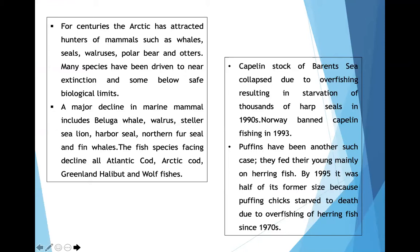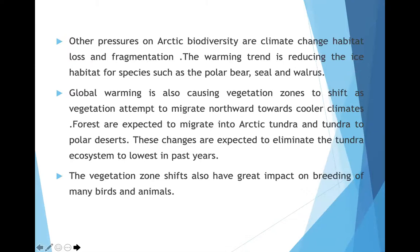Capelin stock of the Bering Sea collapsed due to overfishing, resulting in the starvation of thousands of harp seals in the 1990s. Following that, Norway had to ban capelin fishing in 1993. Puffins have been another casualty — they fed their young mainly on herring. By 1995, the puffin population was half its former size because puffin chicks starved to death due to overfishing of herring since the 1970s. Other pressures on Arctic biodiversity include climate change, habitat loss and fragmentation. Global warming is also causing vegetation zones to shift as vegetation attempts to migrate northward, which will have great impact on the breeding of many birds and mammals.